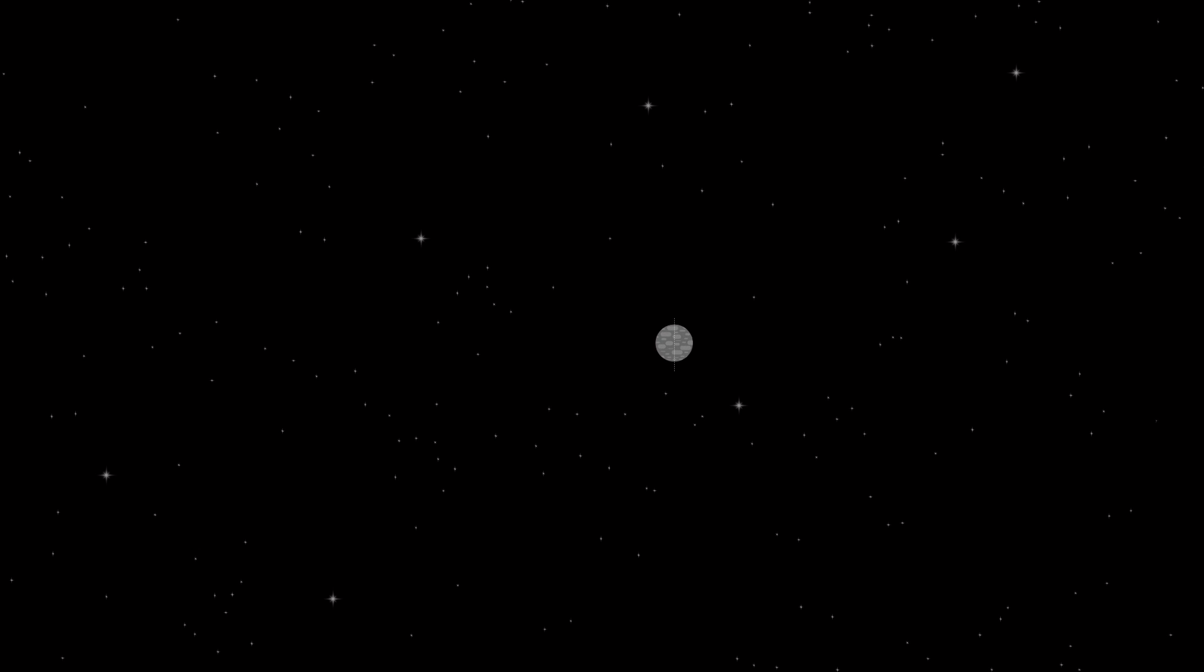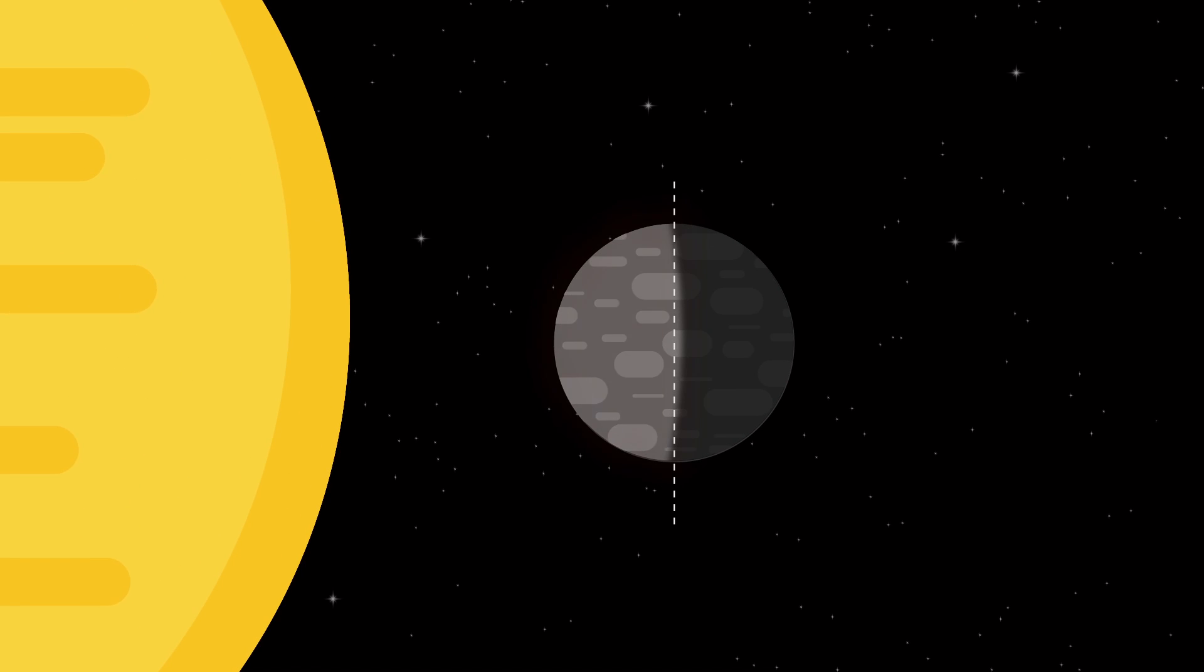Mercury is a tiny rocky world that's full of surprises. So close to the Sun that daytime temperatures can exceed 400 degrees Celsius, though it falls to about minus 130 degrees by night.